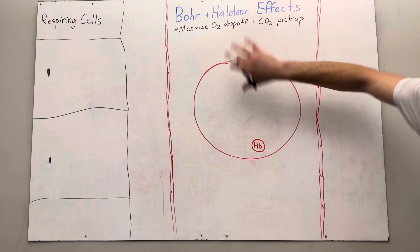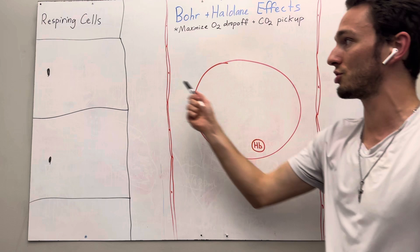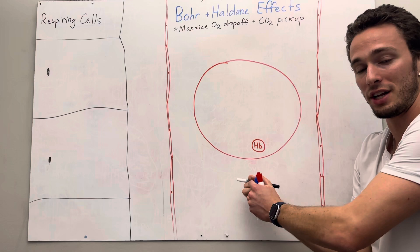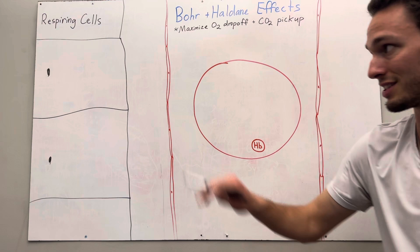So this is going to be the capillary, here's going to be my red blood cell, and we're going to see how these effects come into play to help deliver oxygen to these respiring cells and to take the carbon dioxide away from them, put them back into the bloodstream to eventually go to the lungs to be exhaled. So let's get started.